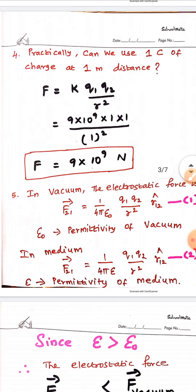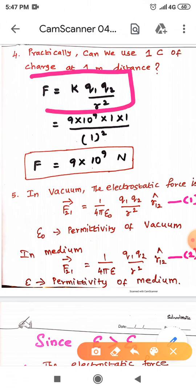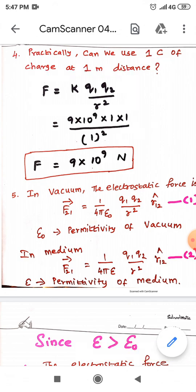The fourth important aspect: can we use 1 coulomb of charge at 1 meter distance practically? To answer this, substitute into Coulomb's law: F = K Q1 Q2 / R², with K = 9×10⁹, Q1 = Q2 = 1 C, R = 1 m. We get F = 9×10⁹ Newton. This is a very huge force — approximately 1 million ton force — so it is not a normal force at all.